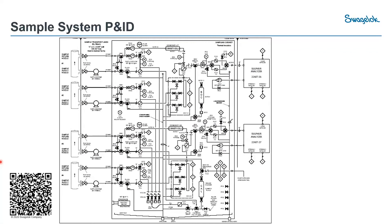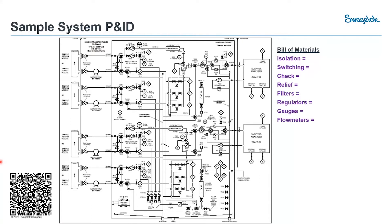If you are the designer or the owner, when you get a P&ID like this, that means when starting from a design — a blank sheet of paper — you need to draw it out and then start to calculate all the different parts you will need. That's what we call the bill of materials.